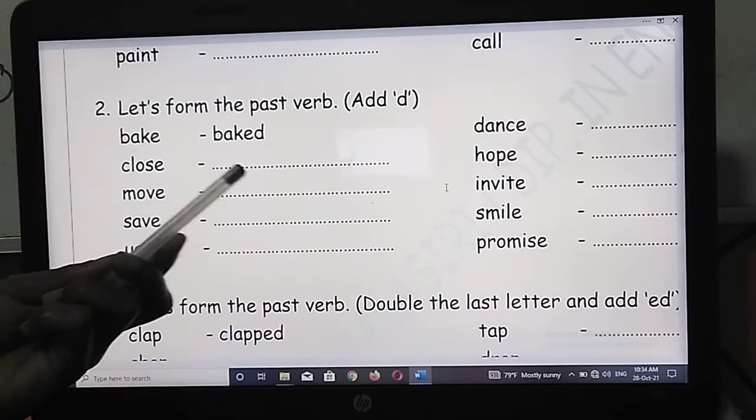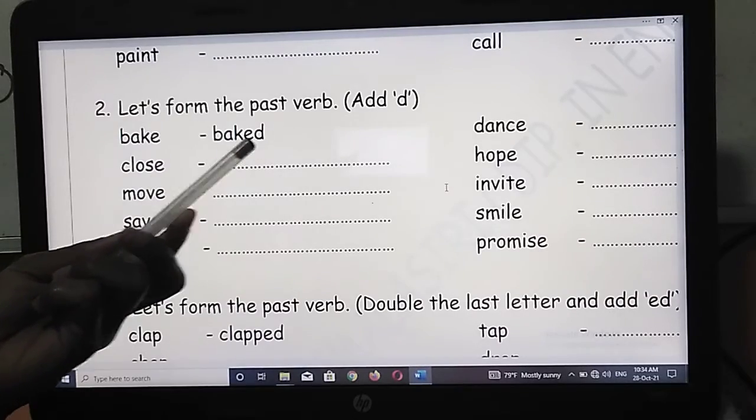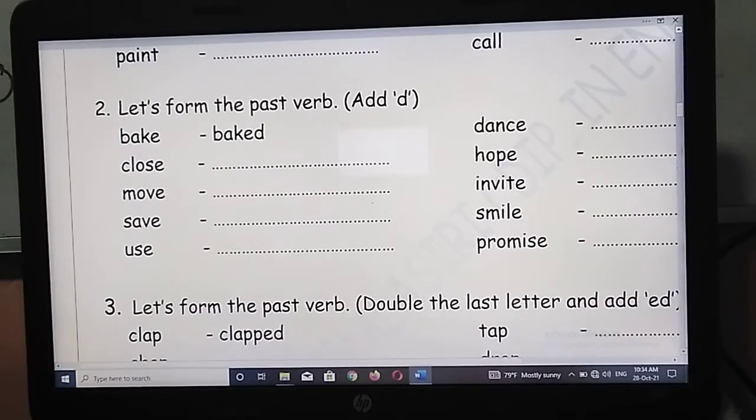First, you have to write the base verb. There is E. So we add only D to the end of the base verb.